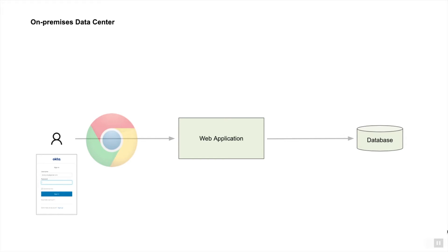For the time being, let's assume that they are all within the enterprise data center. Now if we want to protect this application and allow only certain users to access it, there has to be a way to store the information of these application users somewhere. This user information is called identity, and we could store this in the application database itself. There are production applications today which still use this architecture, but it turns out to be a bad idea for various reasons.